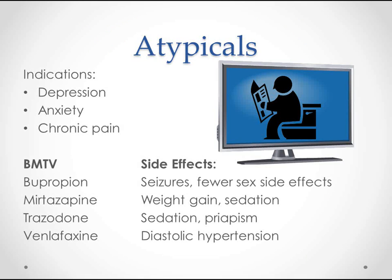Atypicals are used for depression, anxiety, and sometimes chronic pain as well. Bupropion — that's Wellbutrin — you don't want to give this to somebody who has seizures, but you do want to give it to somebody who is worried about sexual side effects. Mirtazapine is a good choice for people who are losing weight or aren't sleeping well and aren't eating enough. You'll avoid it in really overweight people.